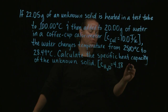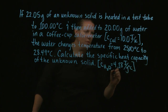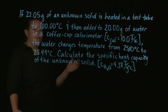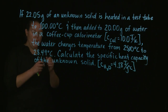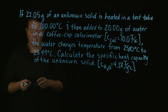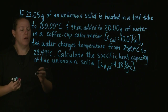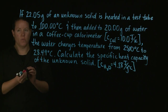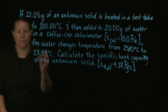Calculate the specific heat capacity of the unknown solid. You need to know that the specific heat of water is 4.18 — or 4.184 if you want more decimal places — joules per gram degrees Celsius. We need to draw a picture and use that picture to calculate everything.